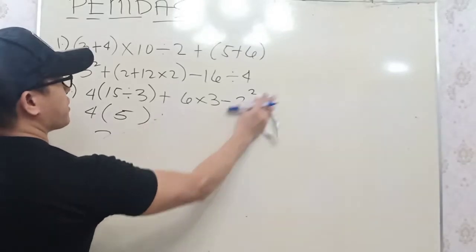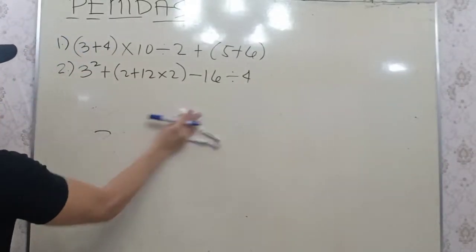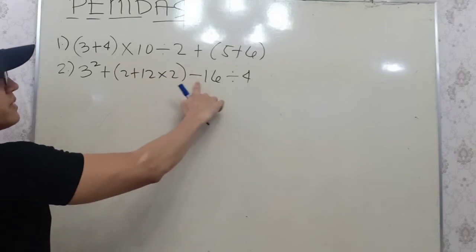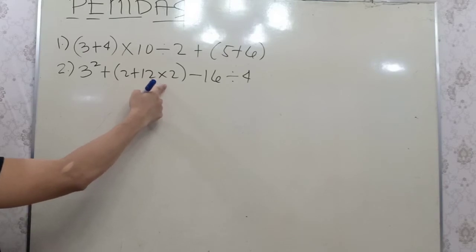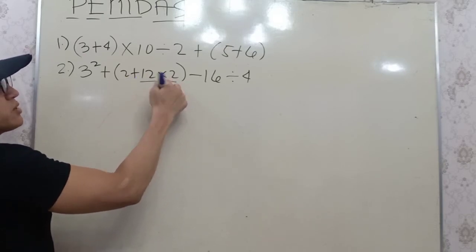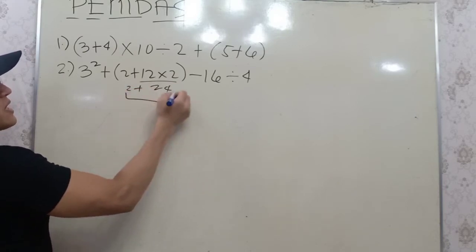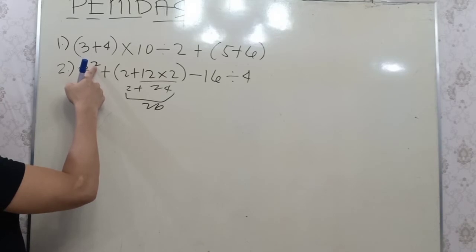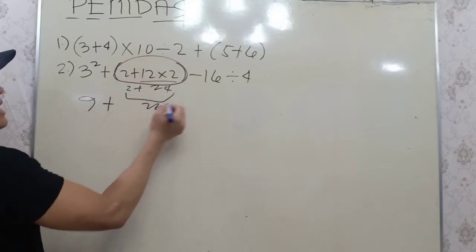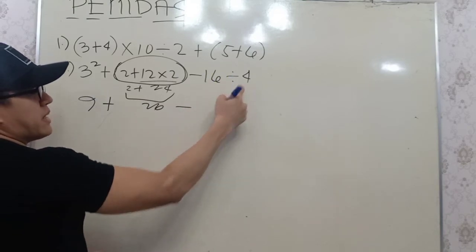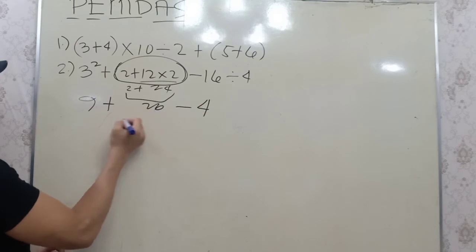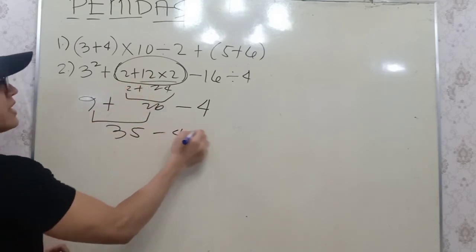Let's move on to number 2: 3 squared plus 2 plus open parenthesis 2 plus 12 times 2 close parenthesis minus 16 divided by 4. We have parentheses, so inside: there's addition and multiplication — multiplication first. 12 times 2 is 24, plus 2 is 26. Then the exponent: 3 squared is 9. Then division: 16 divided by 4 is 4. So we get 9 plus 26 minus 4. That's 35 minus 4, and the answer is 31.